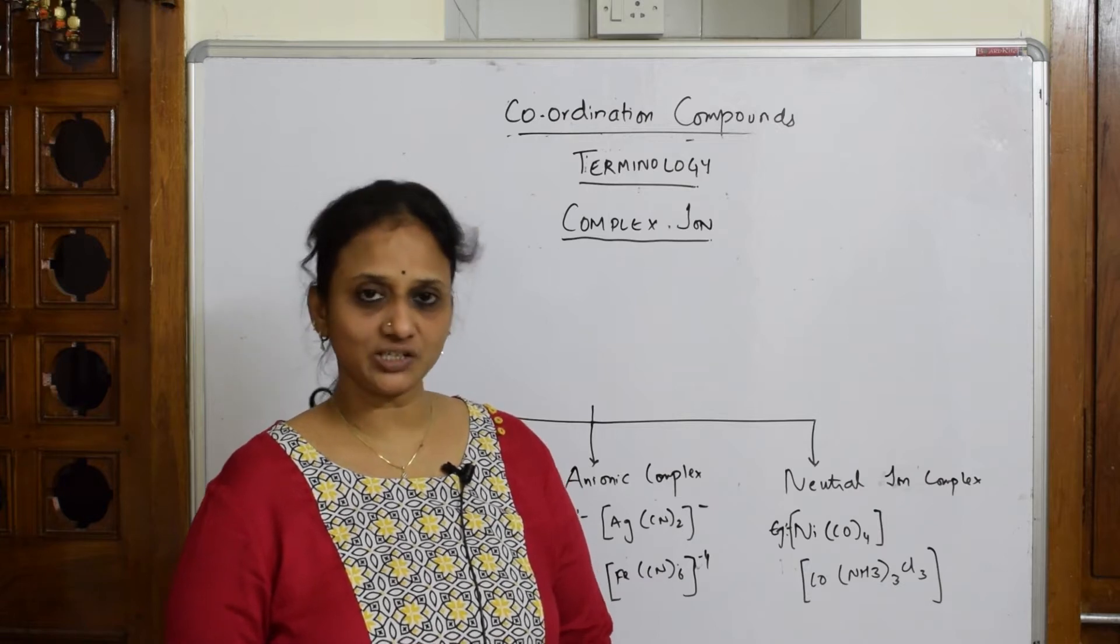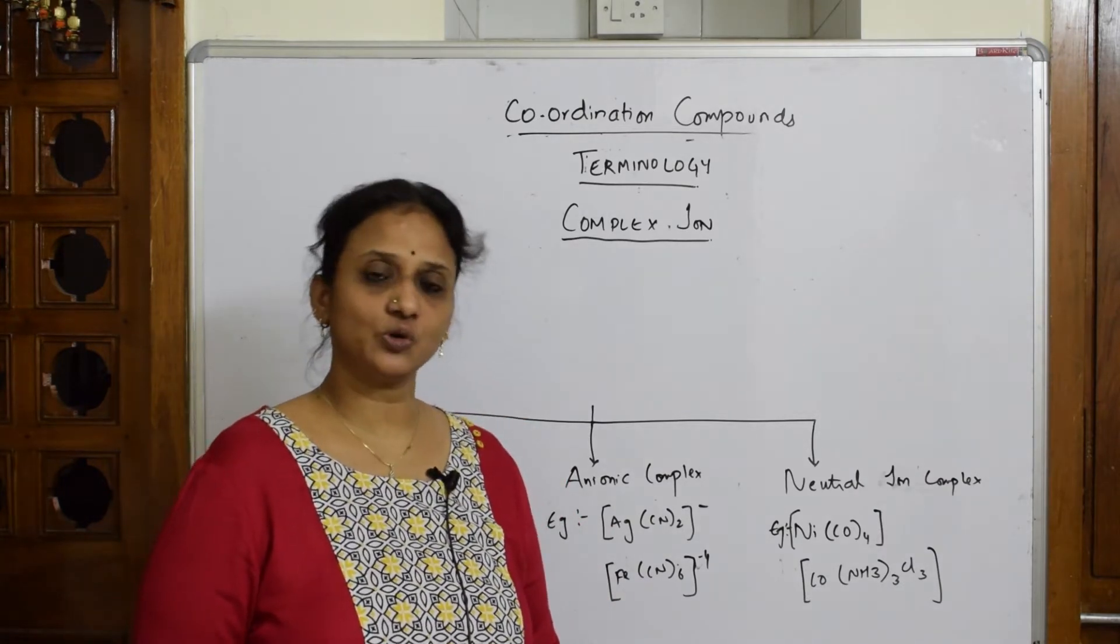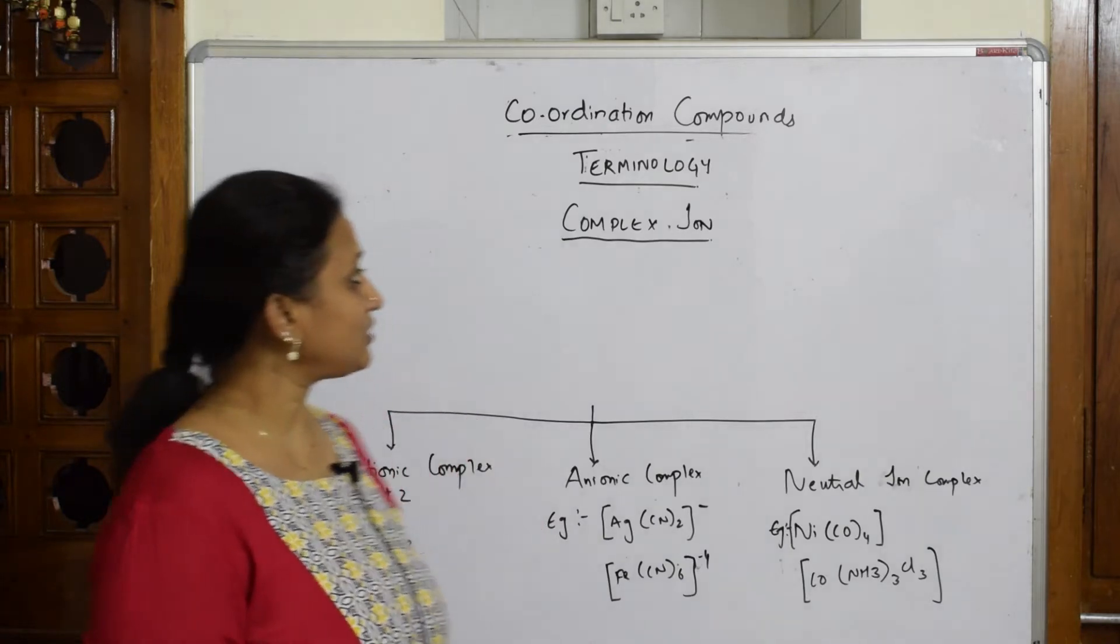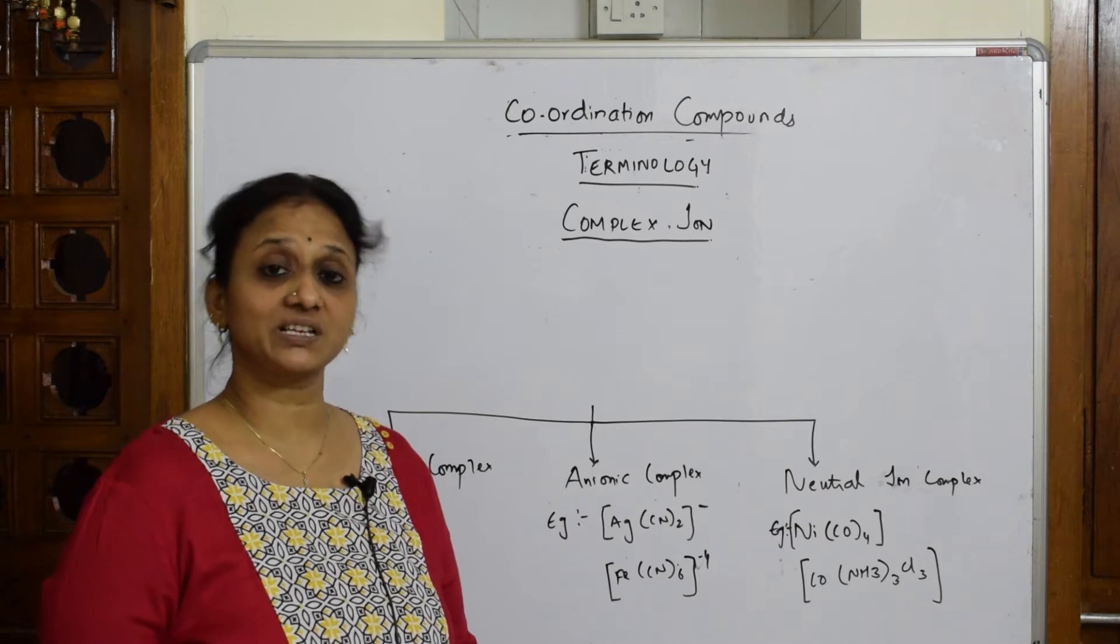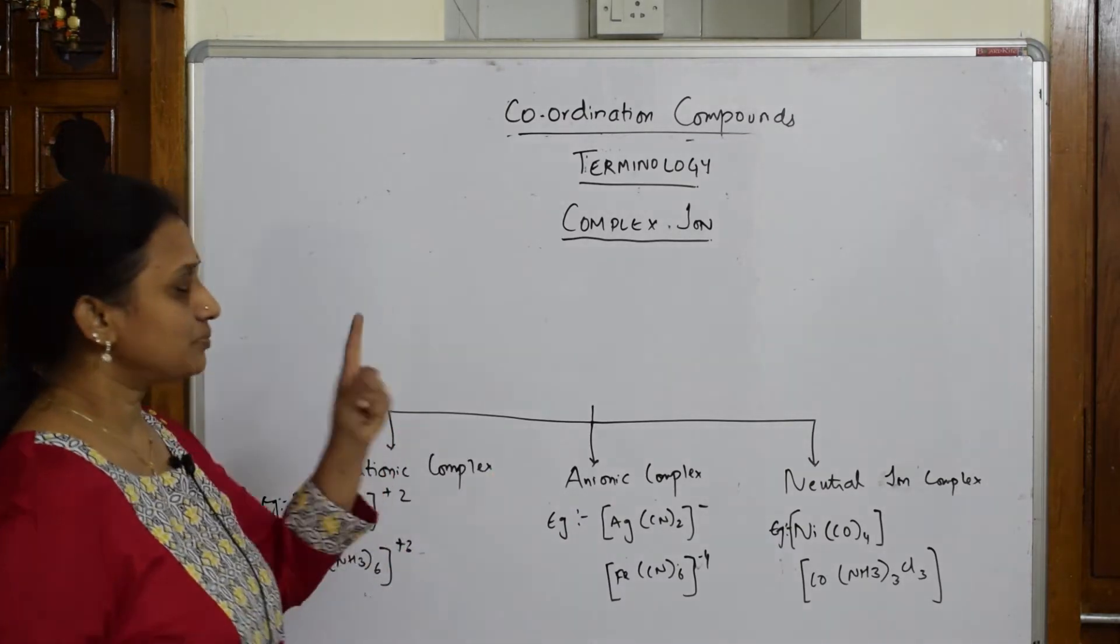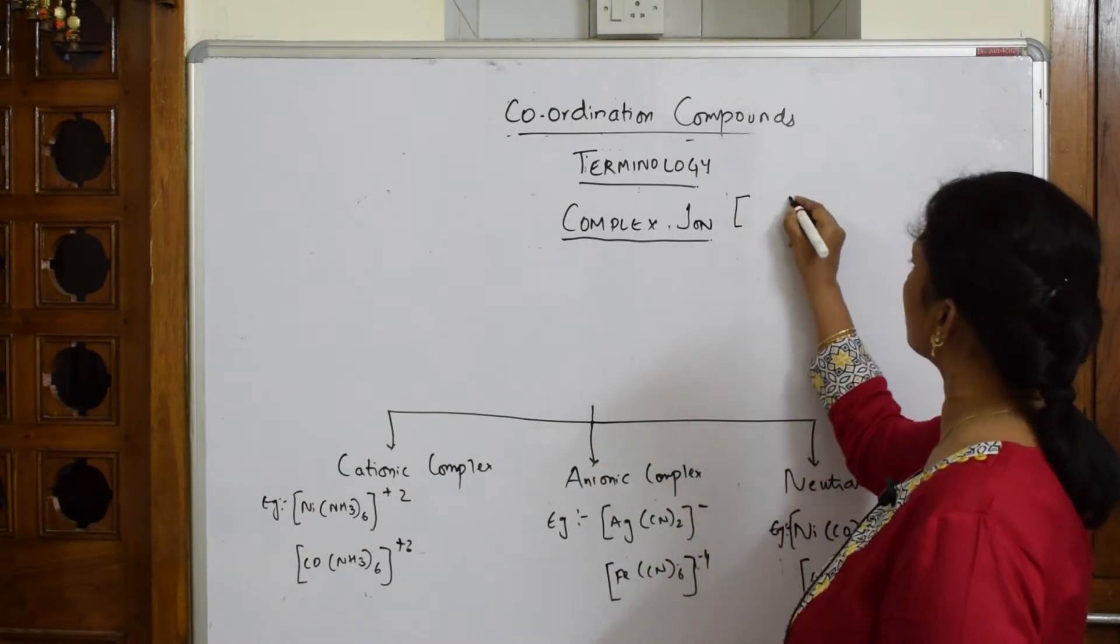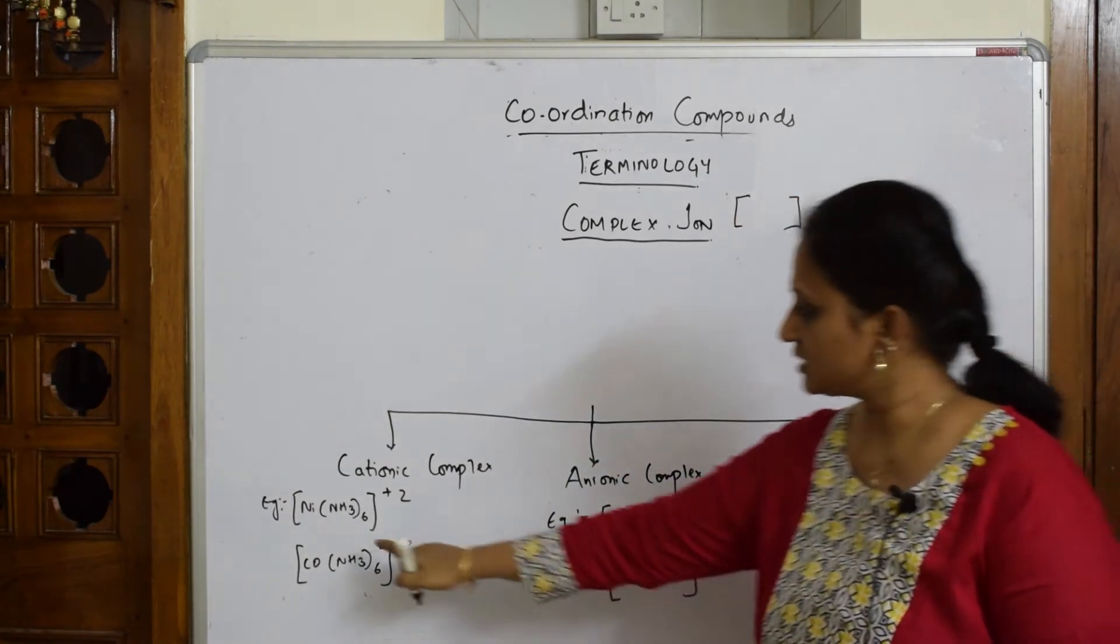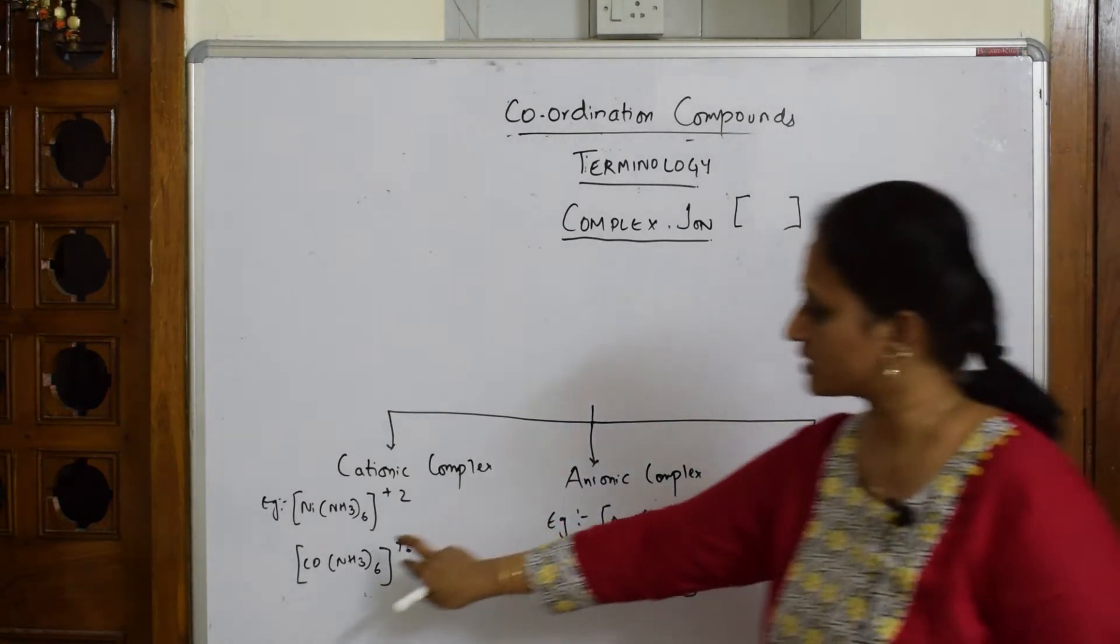Gradually I'll explain all the terminologies and then go into depth. When learning terminology, the first important thing is understanding what is meant by complex ion. In coordination chemistry, complex ions are always denoted by square brackets. All of these shown are complex ions.